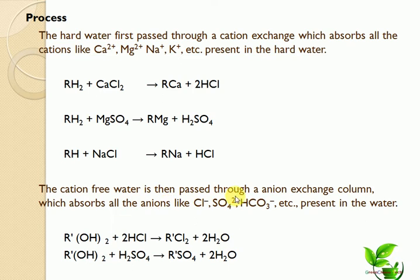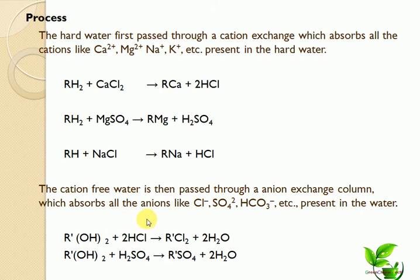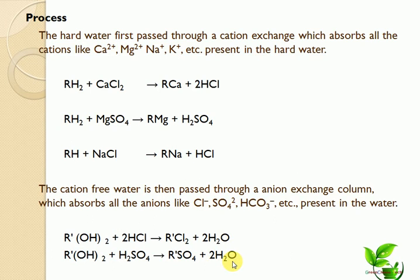The cation-free water is then passed through the anion exchange column, which absorbs all anions like chloride, sulfate, and bicarbonate. The anionic resin, represented as R(OH)₂, reacts with HCl: R(OH)₂ + 2HCl → RCl₂ + 2H₂O. Similarly, sulfuric acid reacts with anionic resin: R(OH)₂ + H₂SO₄ → RSO₄ + 2H₂O.